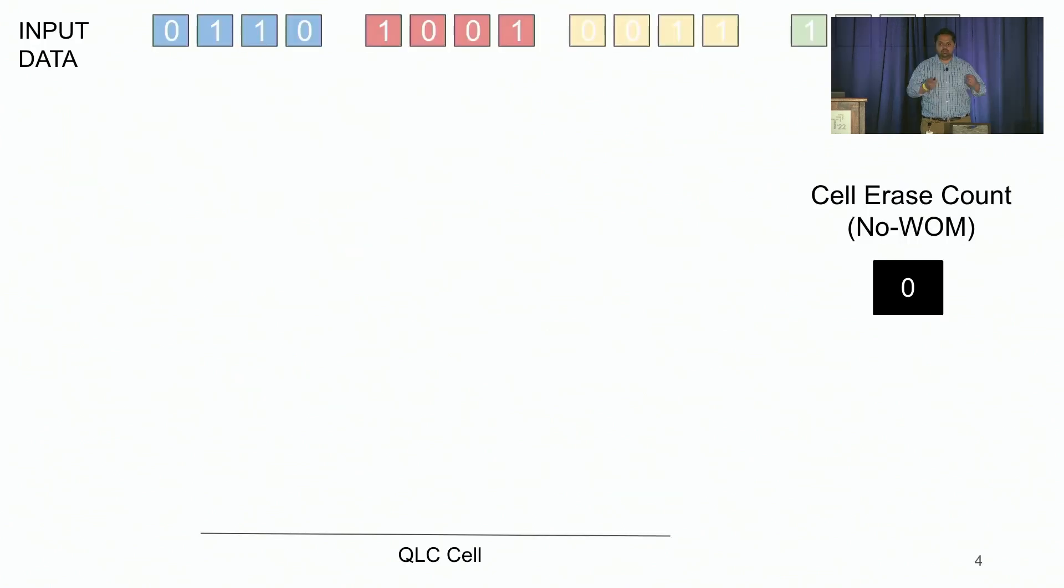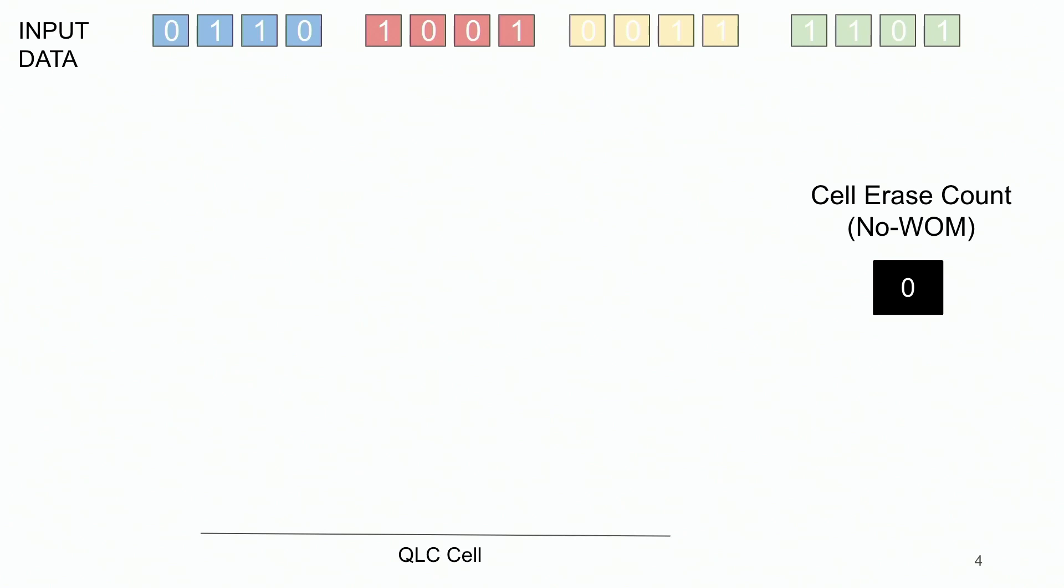Before we understand how WOM V codes work, let's take a simple example of a randomly generated input data and see how today data is stored in a QLC drive. A QLC drive consists of QLC cells, which can store at most four bits at a time in a cell. So when we write input data on a QLC cell, first the previously existing data needs to be erased, so the cell erase count increases to one, after which the first word can be written to the underlying drive.